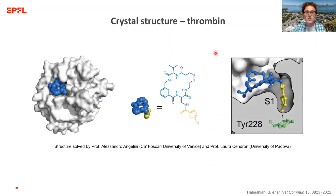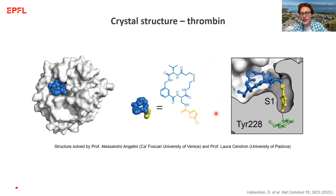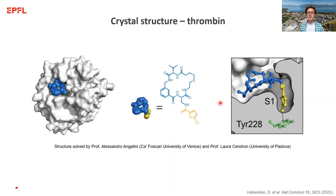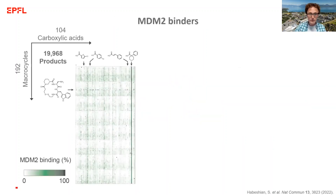We followed this up by sending one of these compounds to our collaborators in Italy, Professor Angelini and Professor Sandron, who were able to crystallize this compound with thrombin. We were very happy to see that the molecule binds a well-defined S1 binding pocket, and the lateral carboxylic acid group is sitting inside that pocket making a specific halogen-pi interaction with one of the side chains. These results confirmed that yes, we can find specific binders from these crude synthetic libraries.